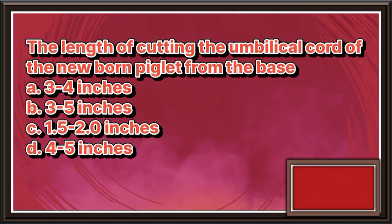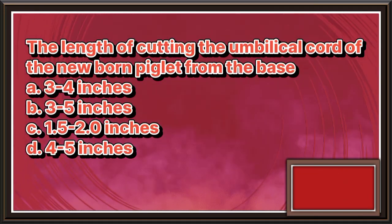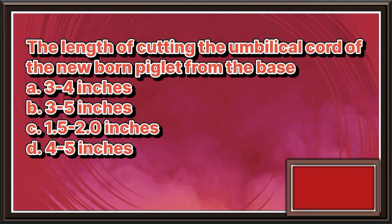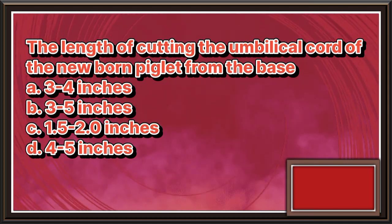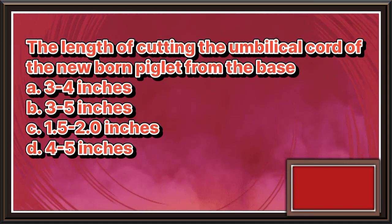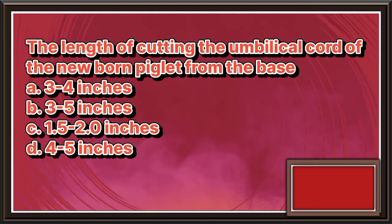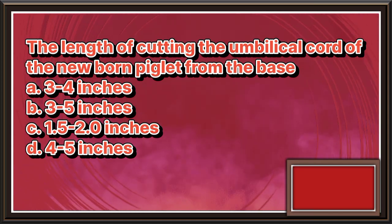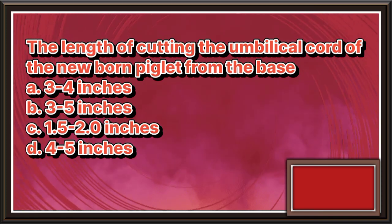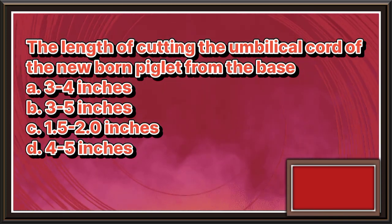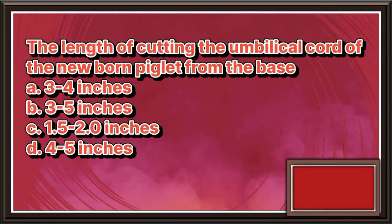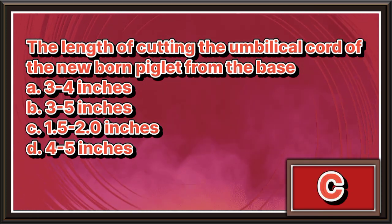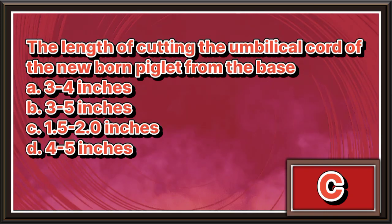The length of cutting the umbilical cord of the newborn piglet from the base. a. 3 to 4 inches. b. 3 to 5 inches. c. 1.5 to 2.0 inches. d. 4 to 5 inches. The answer is letter c.